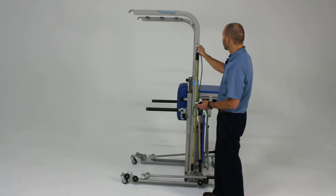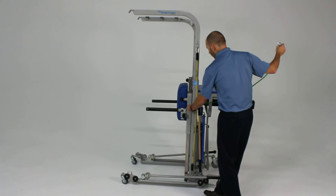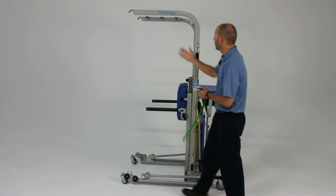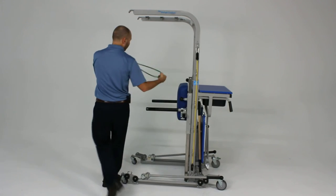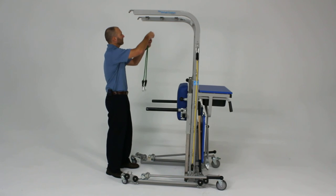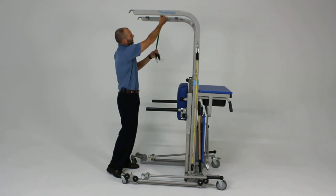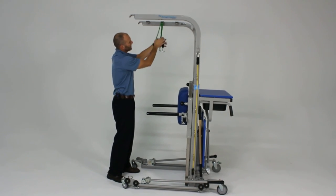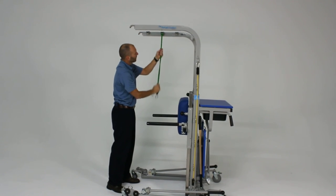You can also attach resistance cords to the upper portion of the unit by doing what's called a girth hitch, where you simply double up the cord, take that looped end, extend it through, and then drop the ends down through that loop to hang it.